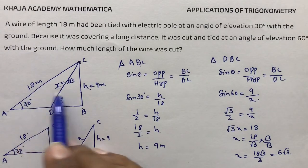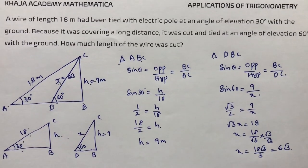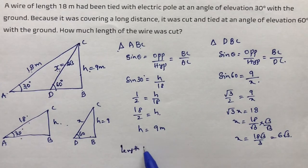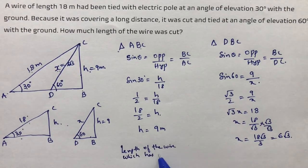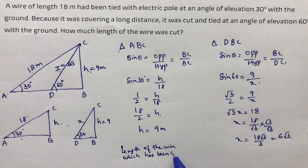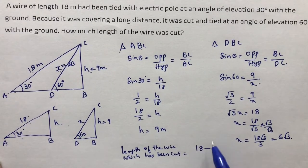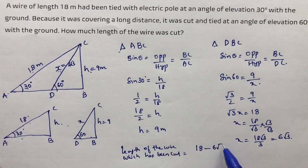The original length was 18 meters. Now it is 6 root 3 meters. So the length of wire that was cut is 18 minus 6 root 3 meters.